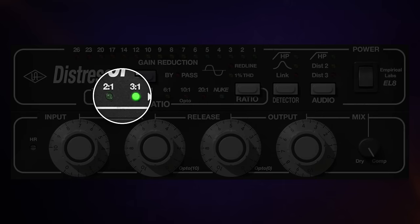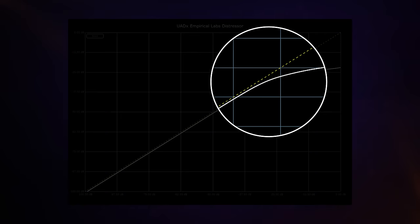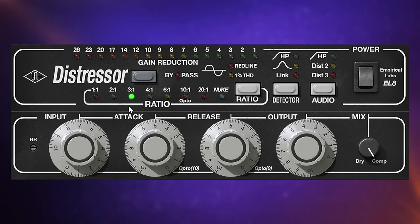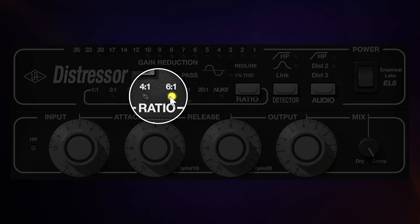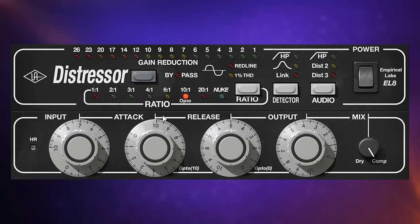With the 2:1 and 3:1 ratios, a soft knee is applied — meaning the ratio is applied gradually below the threshold and reaches its full extent above it, gradually increasing gain reduction depending on the incoming level. That knee is made softer with the 4:1 and 6:1 ratios. At the 10:1 ratio, we have an optocompressor emulation. Think of famous compressors like the LA-2A. Setting attack to 10 and release to zero is a good starting point to emulate something like an LA-2A.